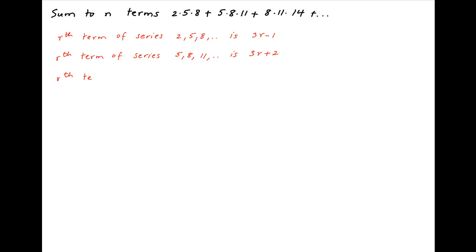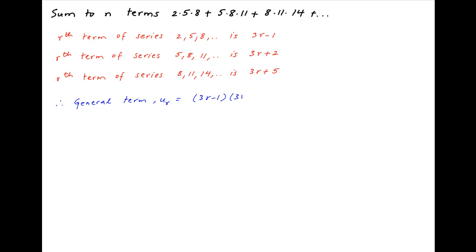And finally, the third components are 8, 11, 14, and so on. Therefore, the third component of the general term of the given series is 3r plus 5. Therefore, the general term of the given series is equal to (3r minus 1)(3r plus 2)(3r plus 5).